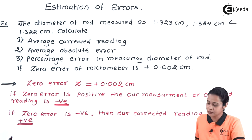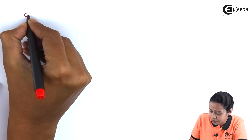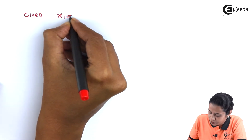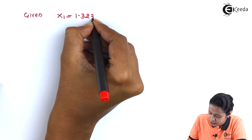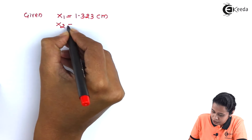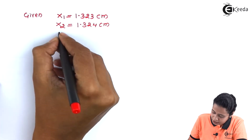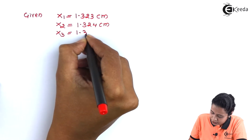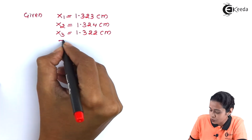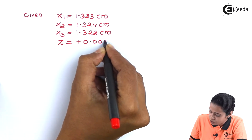Let us start with the given values. There are three diameters given: diameter x1 = 1.323 cm, diameter x2 = 1.324 cm, and diameter x3 = 1.322 cm. The zero error Z is given as +0.002 cm.